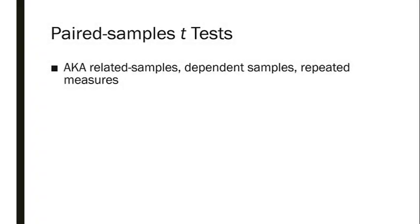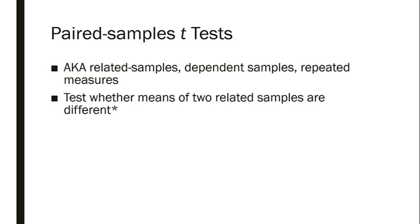Paired samples t-tests go by many names. What is called a paired sample t-test in SPSS can also be referred to as a related samples t-test, a dependent samples t-test, or a repeated measure. Paired samples t-tests differ from independent samples, because in independent samples you're testing for a difference between two group means, whereas here you're testing whether the means of two related or dependent samples are different.